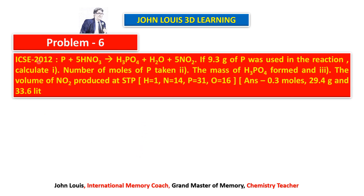The last practice problem is from the ICSE 2012 board examination: P + 8HNO₃ → H₃PO₄ + 4H₂O + 5NO₂ (balanced equation given). If 9.3 grams of phosphorus is used, the atomic weight of P is 31. First question — number of moles of phosphorus: 9.3 ÷ 31 = 0.3 moles. For an element, moles = weight ÷ atomic weight; for a compound, moles = weight ÷ molecular weight.